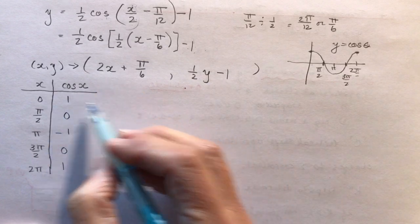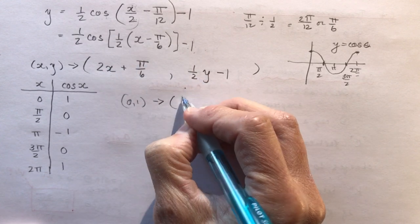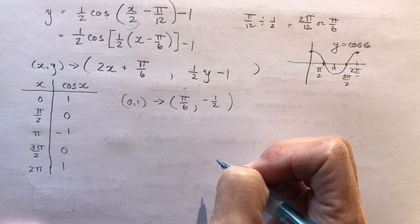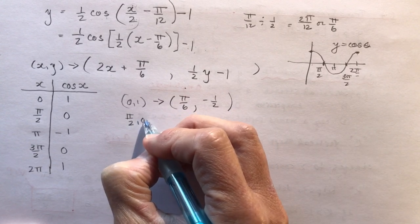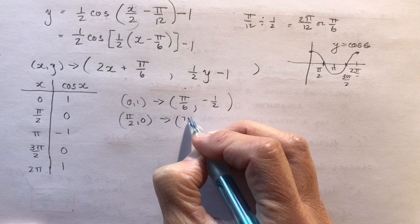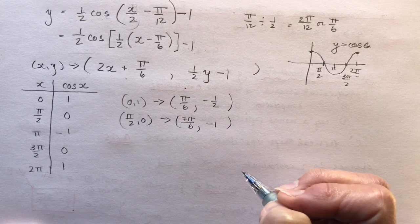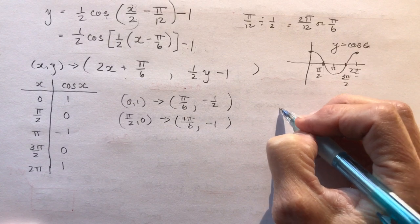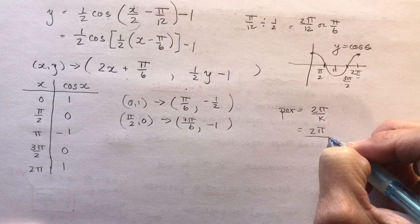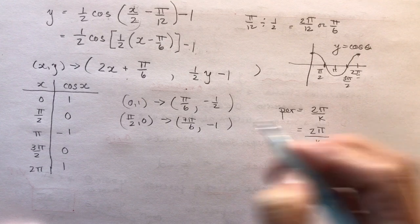Applying the mapping rule — (0, 1) goes to: x = 2(0) + π/6 = π/6, y = ½(1) − 1 = −½. So (π/6, −½). Then (π/2, 0) goes to: x = 2(π/2) + π/6 = π + π/6 = 7π/6, y = ½(0) − 1 = −1. So (7π/6, −1). The period is 2π ÷ ½ = 4π — that's why the points are so spread out.